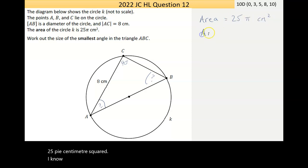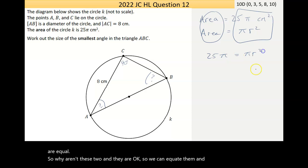Now, I know the area of a circle is equal to πr². And this is a common thing in maths. If you can see those two statements, these two things are equal. So why aren't these two? And they are. So we can equate them and write them equal to each other.